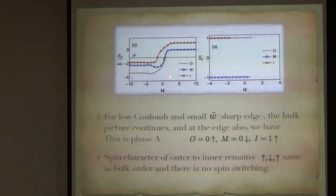What you find is that, for low Coulomb and small W, the bulk picture continues. And, you continue to have 0 up, 0 down, 1 up. If the Coulomb interaction is not very high, and that this thing is sharp. And, the spin character, and if you, we also plotted explicitly the spin character of these states, the spin of the outer and inner remains up, the spin of the middle remains down. So, what we plotted here is spin versus the guiding centers.